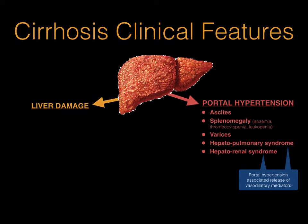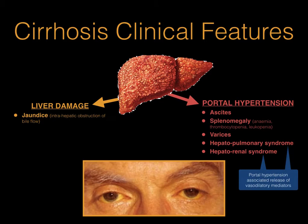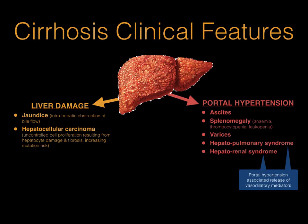In regards to the clinical features of cirrhosis relatable to direct liver damage, jaundice — or the yellow discoloration of the skin and sclera — is due to the interruption of normal bile flow within the liver due to scar tissue formation. Liver cell damage, regeneration, and fibrosis or scar tissue formation leads to an uncontrolled liver cell proliferation, which increases the risk of liver cancer or hepatocellular carcinoma.